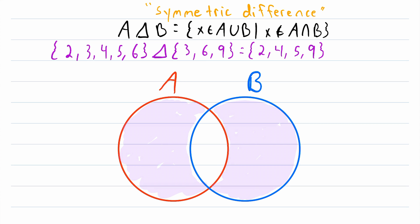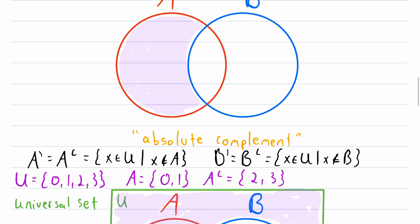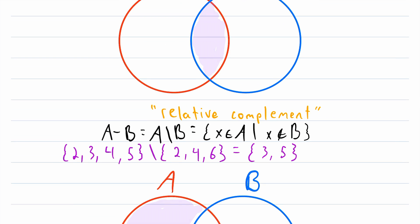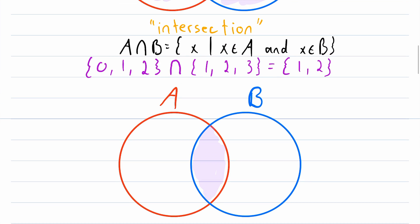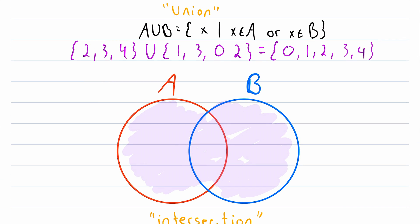That is a brief tour through how to represent different set operations using Venn diagrams. I hope this video helped you understand how to represent these operations. Let me know in the comments if you have any questions, need anything clarified, or have any other video requests. Thank you very much for watching — I'll see you next time, and be sure to subscribe for the swankiest math lessons on the internet.